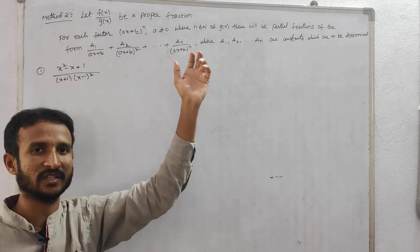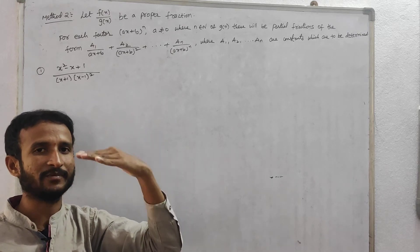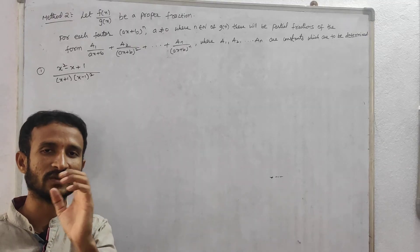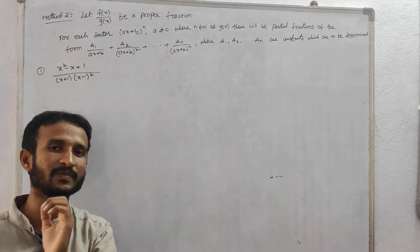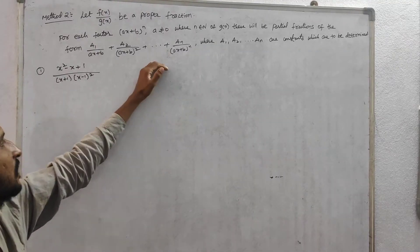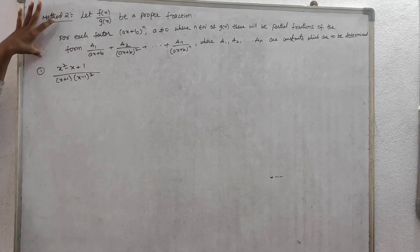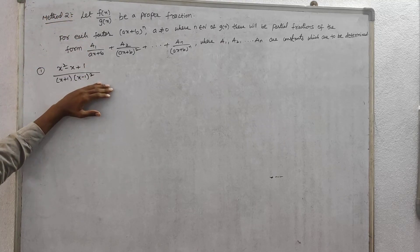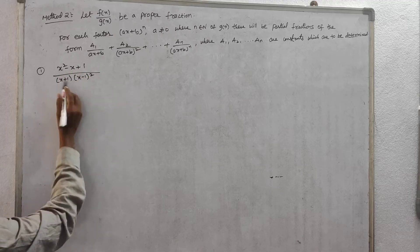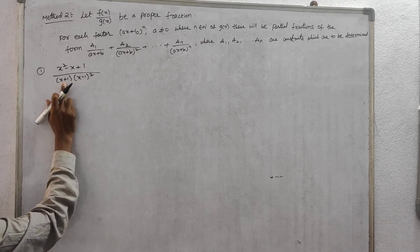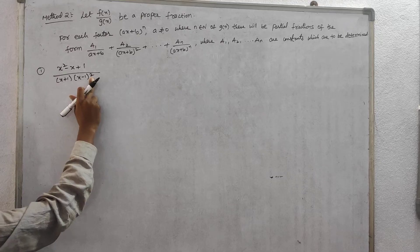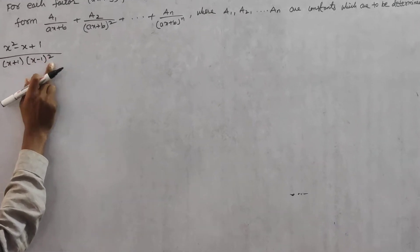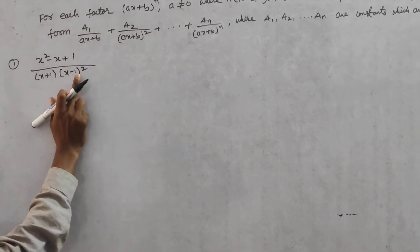We take partial fractions of the form a/(ax+b)¹ + b/(ax+b)² + c/(ax+b)³ with increasing powers. Now consider the problem: (x² - x + 1) / [(x+1)(x-1)²]. Here x+1 is a non-repeated linear factor, while (x-1)² is a repeated linear factor.